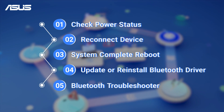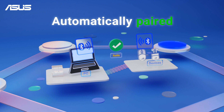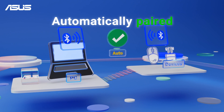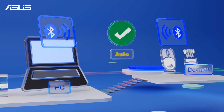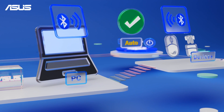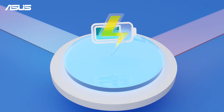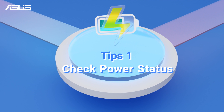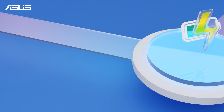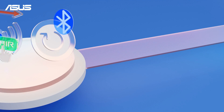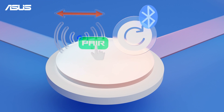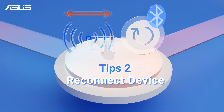Typically, your Bluetooth device should automatically appear when it's powered on and within range of your PC Bluetooth detection. If you are encountering connection problems or experiencing disconnections, let's start by checking the power status of your Bluetooth device. Or you can try to delete the profile settings of your Bluetooth device on your PC, then reconnecting it as a new device.